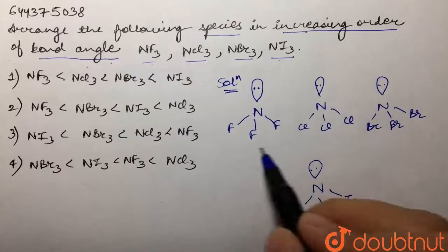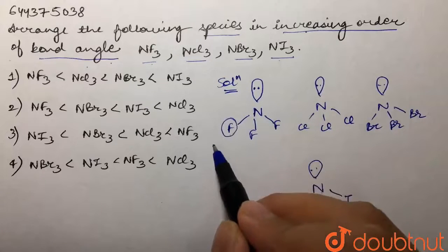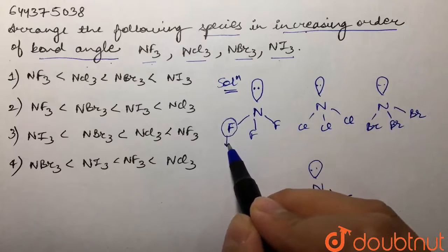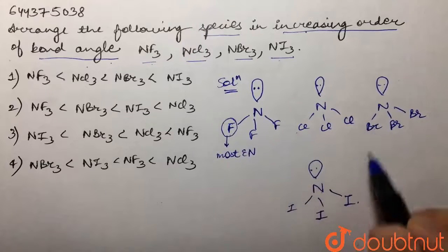Now in this case, the nitrogen is same in every species. There is difference in the halogens attached to the nitrogen. So in the first case, if you look at fluorine that is attached to nitrogen, this is the most electronegative element amongst these halogens attached to nitrogen.